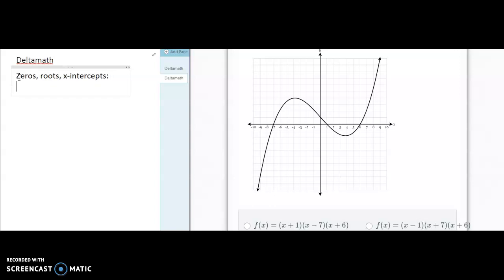We need to find those first to be able to find our factors. So my first zero is x equals negative 7. My second zero is x equals positive 1 because that's where it crosses the x-axis. And then my third one is x equals 6. So we have three different zeros.